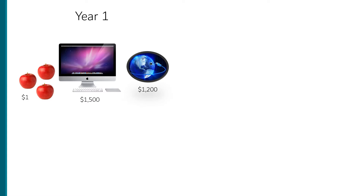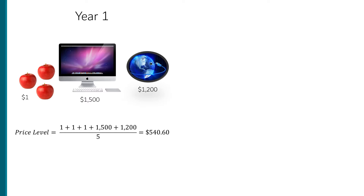To compute our price level, we would take the average of these prices. So we add them together — 1 plus 1 plus 1 plus 1,500 plus 1,200 — and then we divide by the number of things, which is 5, and that gives us an average price of $540.60.